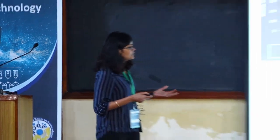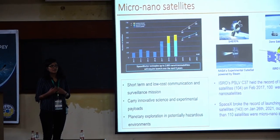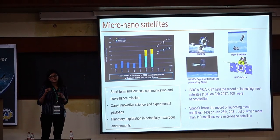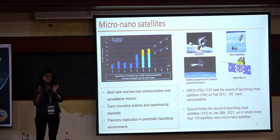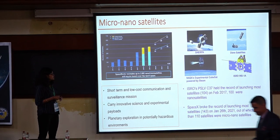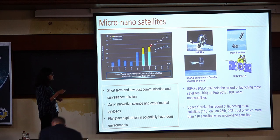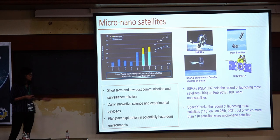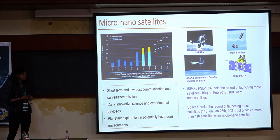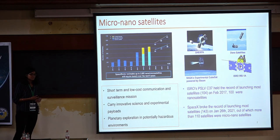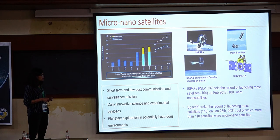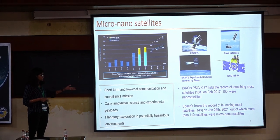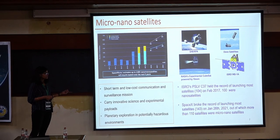The title is capillary-fed evaporative microthruster for micro and nanosatellites. Nanosatellites are basically small-scale satellites. Often the size of these nanosatellites is on the order of 10 cm — a 10 cm cube — and weight can be from 1 to 10 kg. There has been a surge in the number of missions using nanosatellites due to applications in short-term, low-cost communication and surveillance, innovative science payloads, and planetary exploration. SpaceX recently launched 143 satellites in 2021, out of which 110 were micro and nanosatellites.